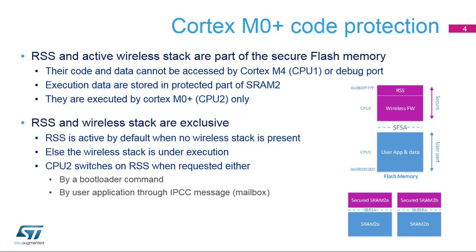Volatile data needed for execution are secured in the secure part of the SRAM2 memory. The RSS firmware and wireless stack are exclusive — the Cortex-M0 Plus Core can execute either one or the other. By default, when no wireless stack is installed, the RSS is active.